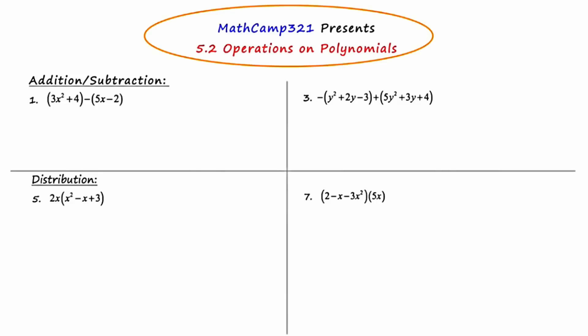In example one, we are asked to subtract two polynomials one from the other. The thing that hangs students up the most about this type of problem is that when you're subtracting, that negative which precedes the second set of parentheses is going to negate everything beyond it. Be careful to distribute this negative to each term in the set of parentheses that follows it.